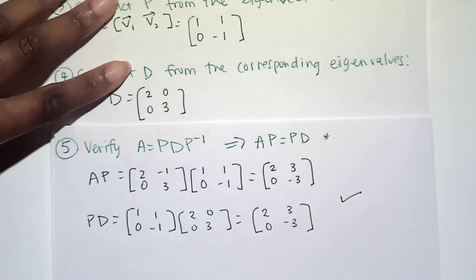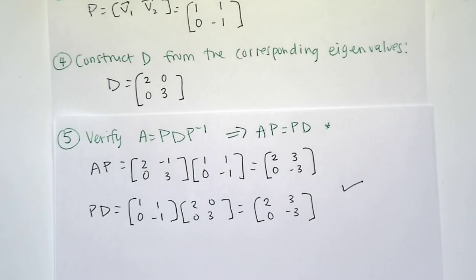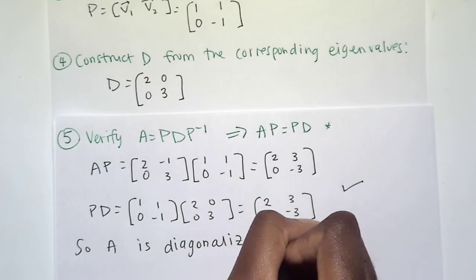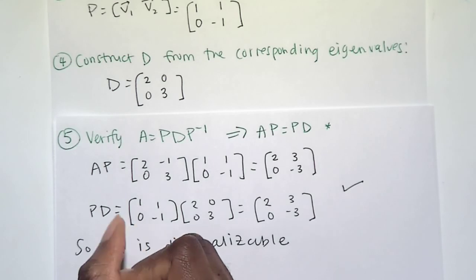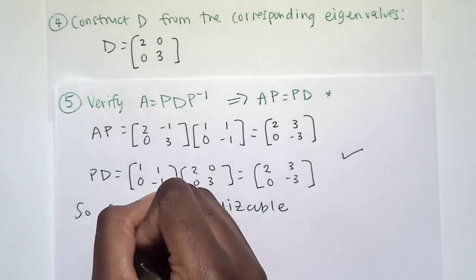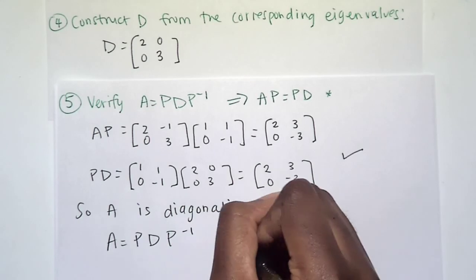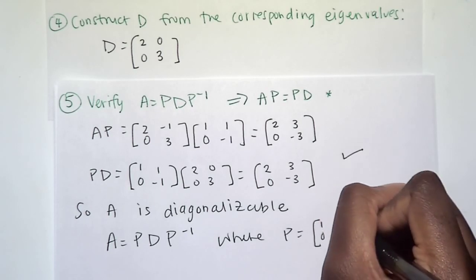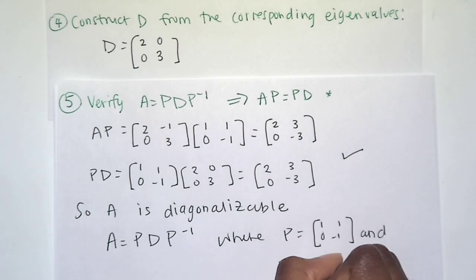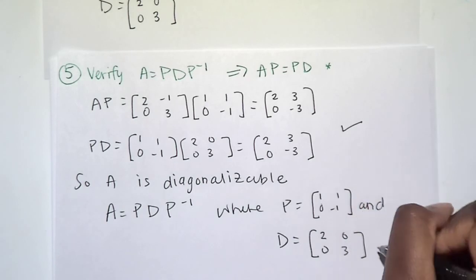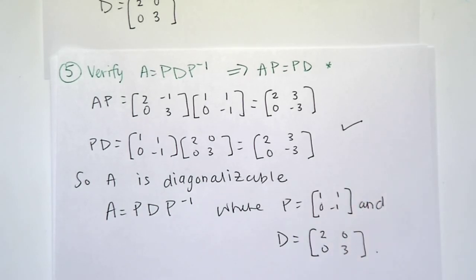So our matrix A is diagonalizable. And A, which is, I'll write the whole statement out for us, A equals PDP inverse, where P is our matrix P and D is our diagonal matrix D. Let's do one more example, and I'll do it in the next video.